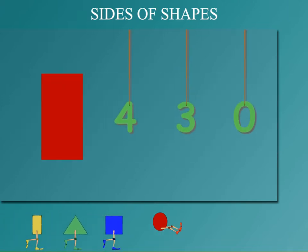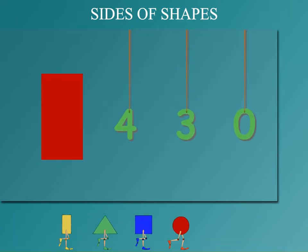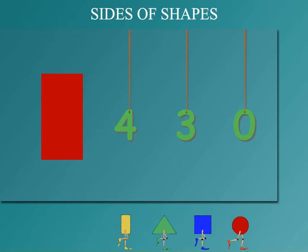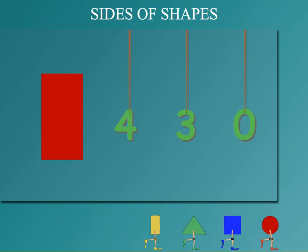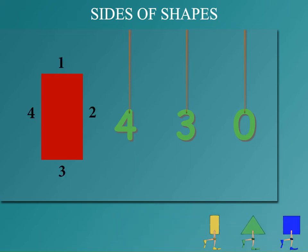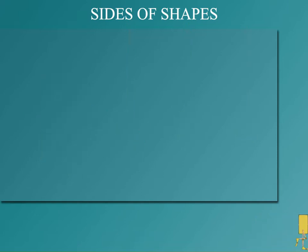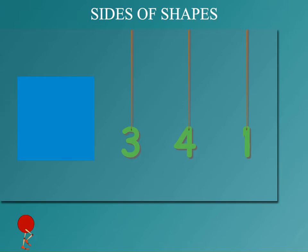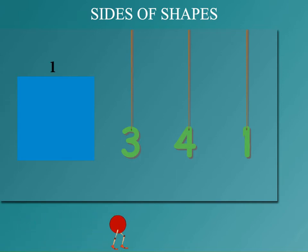Here is a rectangle — how many sides? Four, or three, or zero? Count quickly. It has four sides! Here is another figure — a square. How many sides now? Three, or four, or one? Let's count. This square has four sides also.